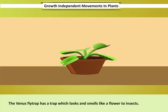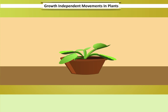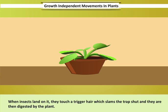The Venus flytrap has a trap which looks and smells like a flower to insects. When insects land on it, they touch a trigger hair which slams the trap shut and they are then digested by the plant.